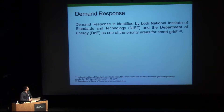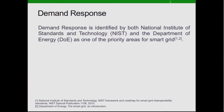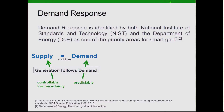As we know, demand response is crucial for the Smart Grid. It represents the transition of control paradigm from the traditional generation-follows-demand to more like demand-follows-generation, at least to some extent. This is because with more renewable generations such as wind and solar, the supply side becomes less controllable and has high uncertainty. Although we can use energy storage to solve the problem, it is very expensive.